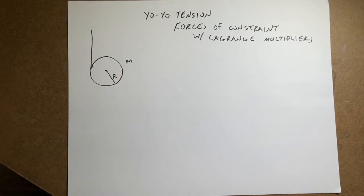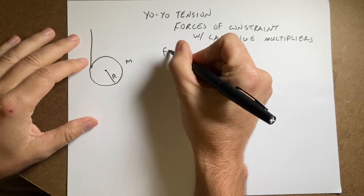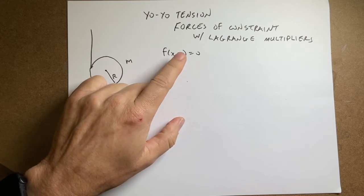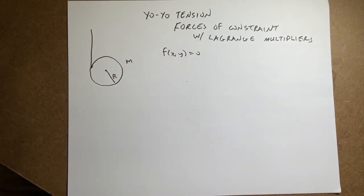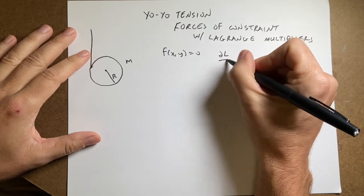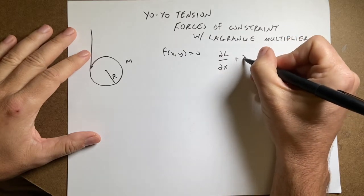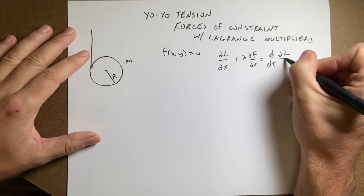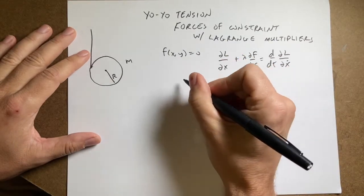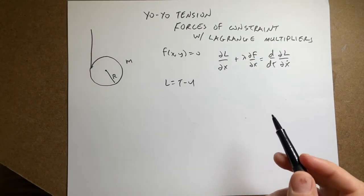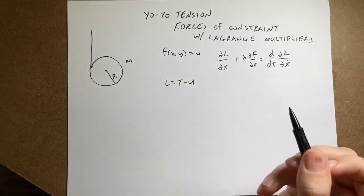So let's do this with force. In order to find the force of constraint, we need the following: first, some function F of X and Y equals zero — this is our constraint equation. Then we need to find the Lagrangian. In general, the partial of L with respect to X plus lambda times the partial of F with respect to X equals the time derivative of the partial of L with respect to X-dot, where L equals T minus U.